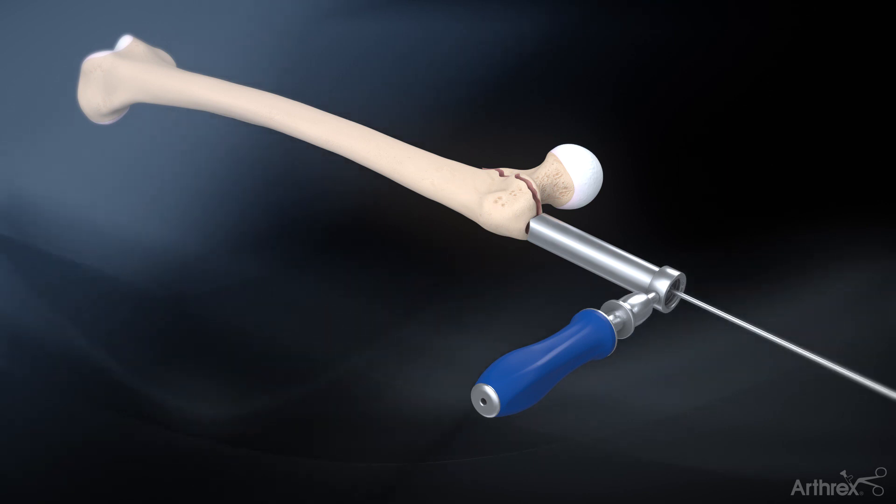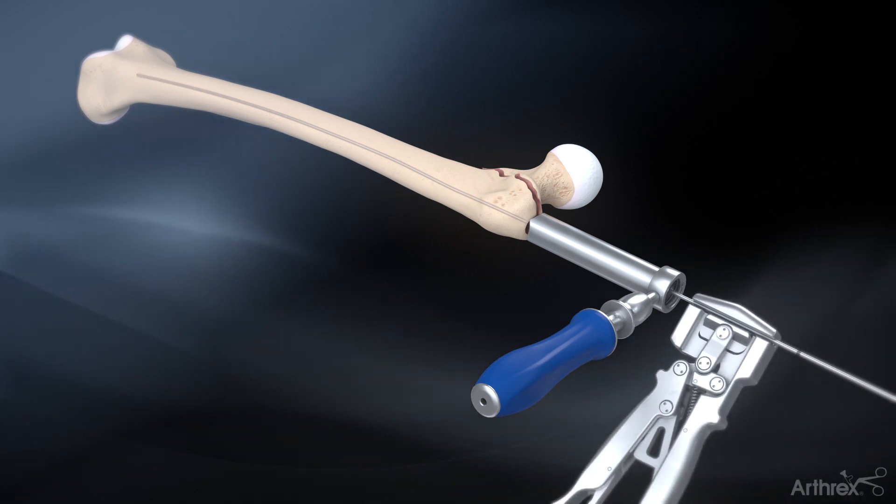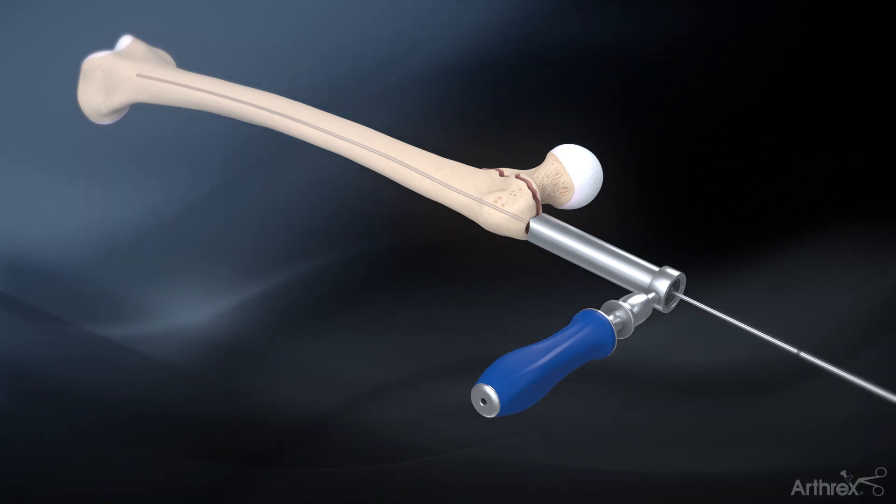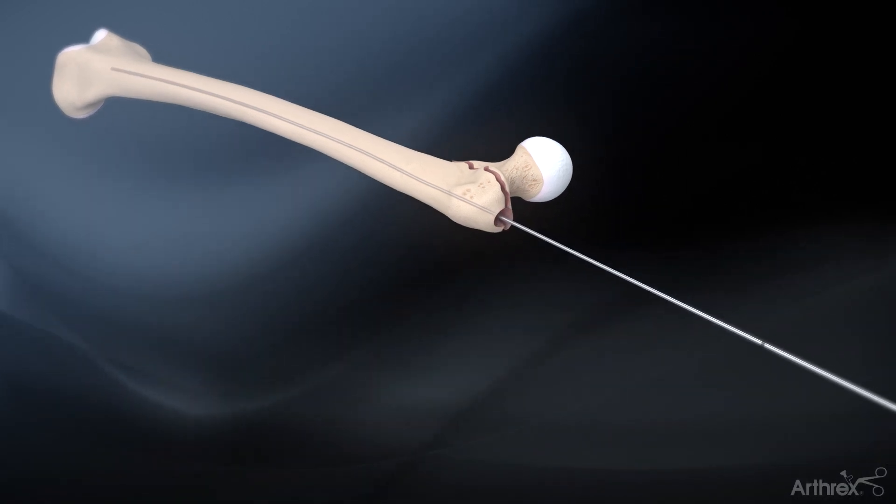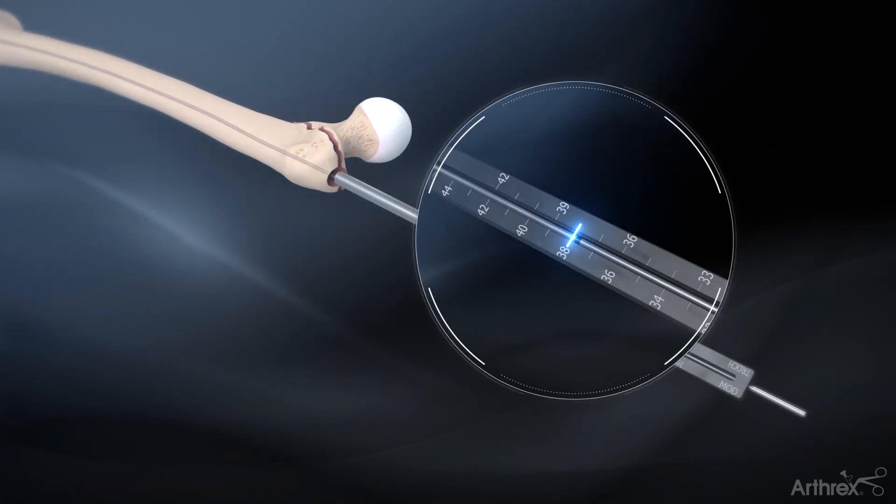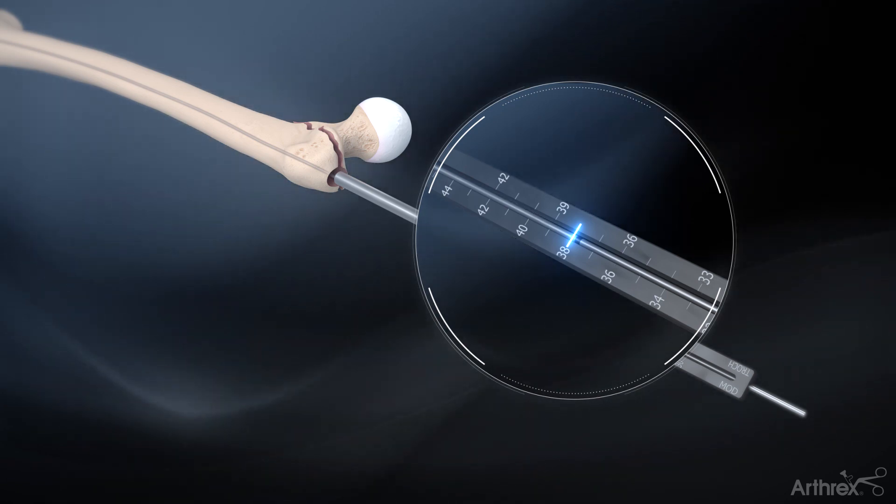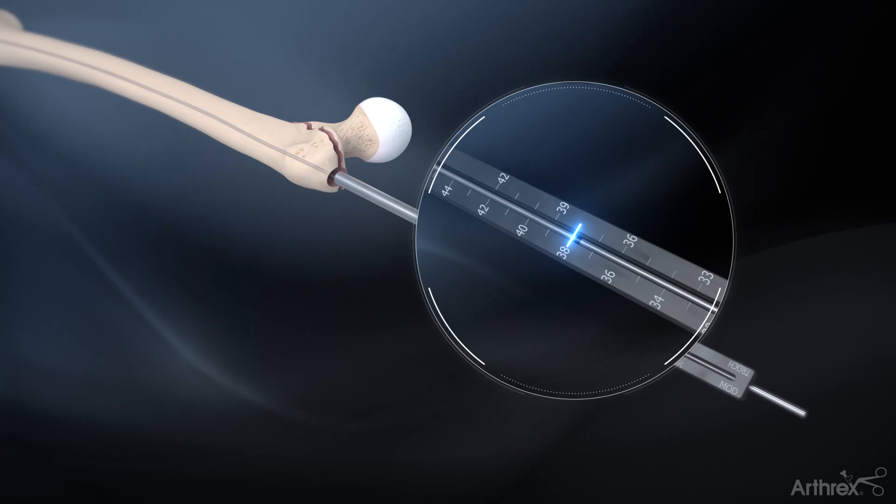The 3.2 mm guide pin is removed and the 3.0 mm ball nose guide wire is introduced down the shaft of the femur using the guide wire gripper. The length for the ES trochanteric nail and long trochanteric nail is determined by sliding the guide wire depth gauge over the guide wire to the greater trochanter and reading the measurement from the laser mark on the guide wire.